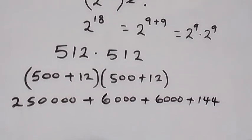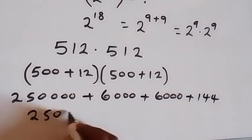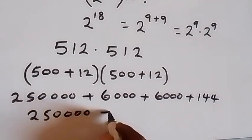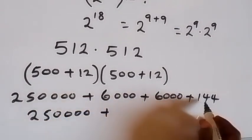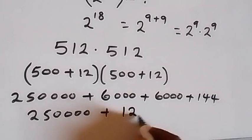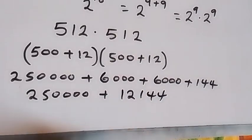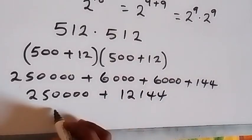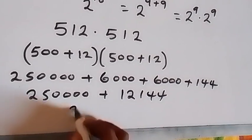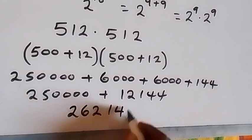Next step we have 250,000 plus 12,000 plus 144. When we add this to 250,000, this gives us 262,144.